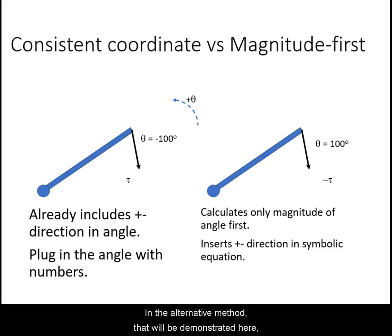In the alternative method that will be demonstrated here, we will only care about the magnitude of the angles and hence torques, and we'll insert the positive and negative direction in the torque equation.